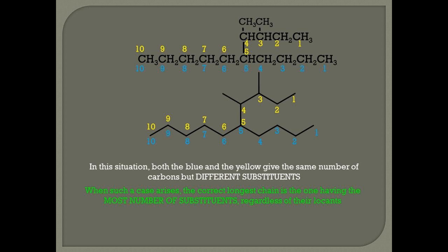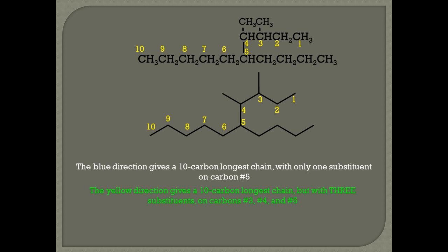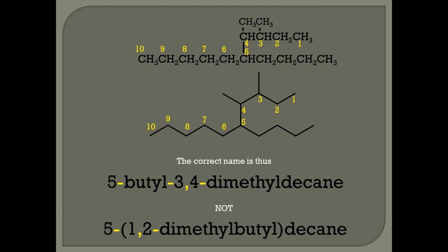Rule fourteen. Consider this situation where both the blue and yellow directions give the same number of carbons but different substituents. When such a case arises, the correct longest chain is the one having the most number of substituents, regardless of their locants. The blue direction gives a 10-carbon longest chain with only one substituent on carbon 5. The yellow direction gives a 10-carbon longest chain with three substituents on carbons 3, 4, and 5. Therefore, the yellow direction is correct, and the name is 5-butyl-3,4-dimethyldecane.